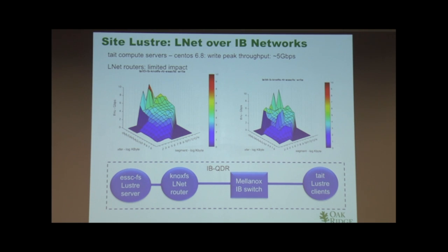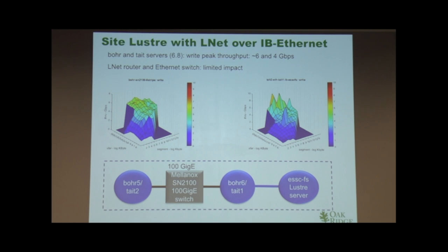We wanted to systematically test this. We have a Lustre file system mounted locally over IB with known performance. Compared to that, if you mount a Lustre file system on the remote side, what would be the difference? First, we introduced LNet routers. We started by putting the LNet router on the IB network itself — no media conversion, IB to IB — and computing the profiles. It looks like there's very little impact; no real overhead in using LNet router in this configuration. Then for media conversion from IB to Ethernet through a single switch, also still a local transfer — again not much impact.